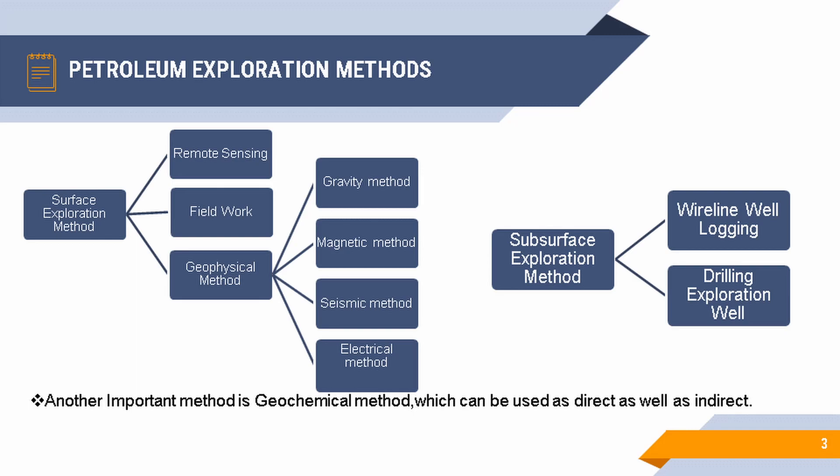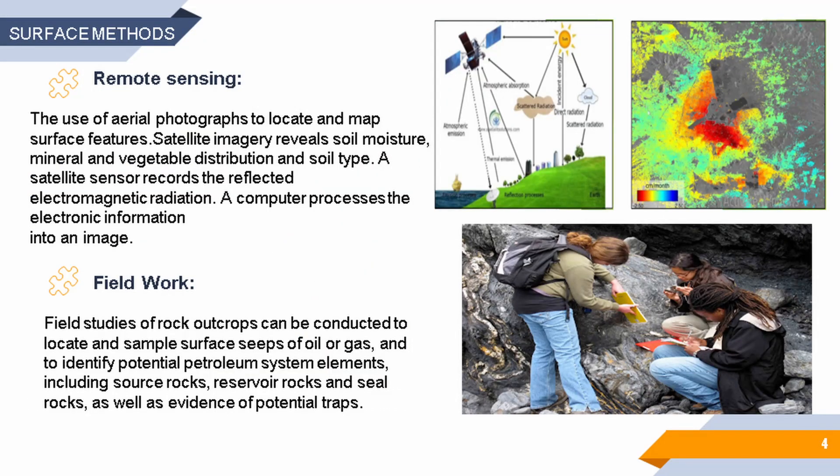Petroleum exploration methods are divided into surface and subsurface exploration. For surface, we use remote sensing, fieldwork, and geophysical methods. For subsurface, we use two types of methods, specifically well logging and drilling the exploration well. There are also geochemical methods which can be direct as well as indirect.